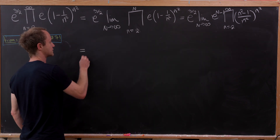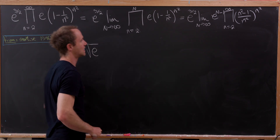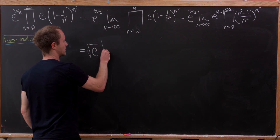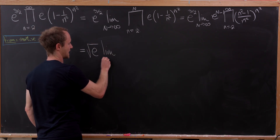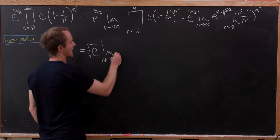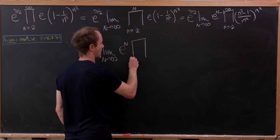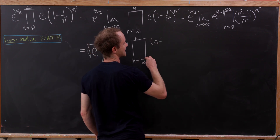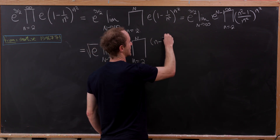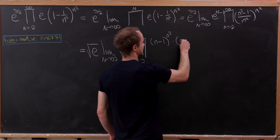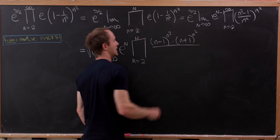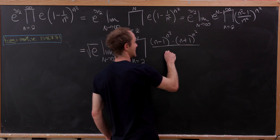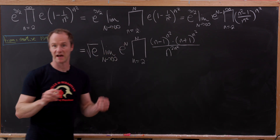So all of that simplifies to the square root of e — that comes from e to the three halves and then the e to the minus 1 that we're pulling out. Then we have the limit as capital N goes to infinity, with e to the n inside, and the product as little n goes from 2 up to capital N. We factor as n minus 1 to the n squared times n plus 1 to the n squared, and the denominator is n to the 2n squared by exponent rules.